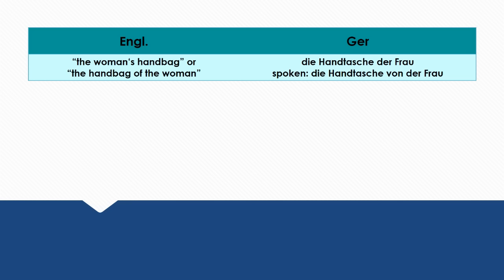In colloquial speech, most of the time you will hear 'die Handtasche von der Frau.' But it's very important that when you write a text, especially in a formal exam, you use the genitive. I would advise that you learn both forms. In spoken language, it's much more natural to use 'die Handtasche von der Frau,' but in written language, I would suggest 'die Handtasche der Frau.' It sounds much better, it's grammatically correct, and it's the way that you should write a text.